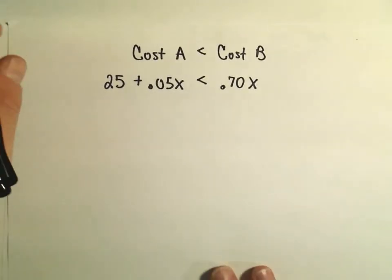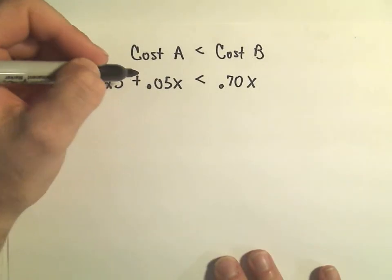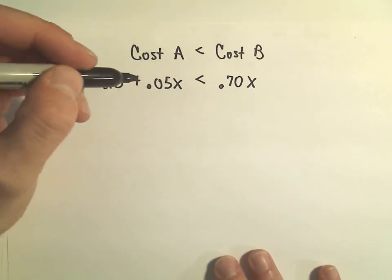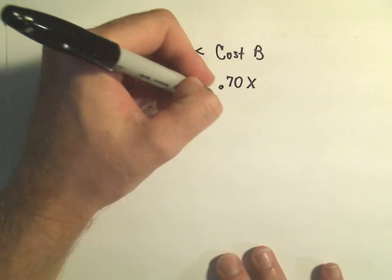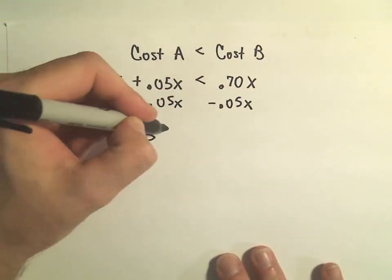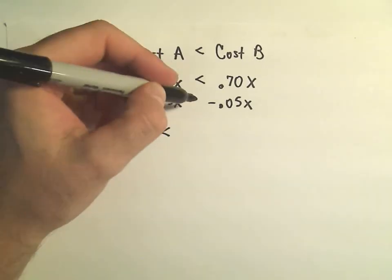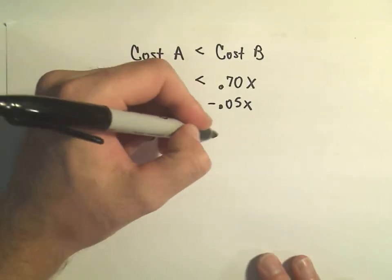The first thing I'm going to do is put the X's on the right side. So minus 0.05X minus 0.05X. So we have 25 less than, 0.70 minus 0.05 is 0.65X.